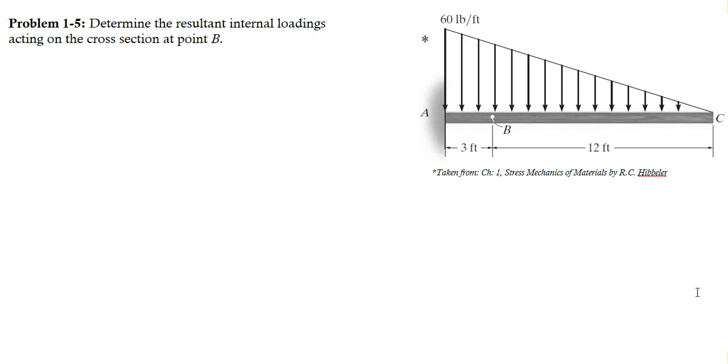First of all I have to draw the free body diagram of the right portion and then I can determine the internal loading acting at point B. So this is the right portion of the beam after cutting the member at point B. Now let's draw the free body diagram of this portion.